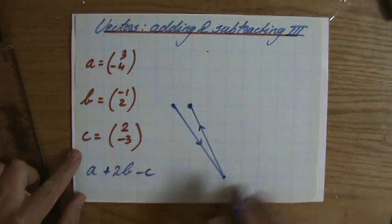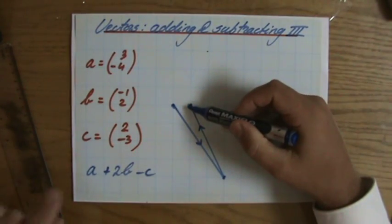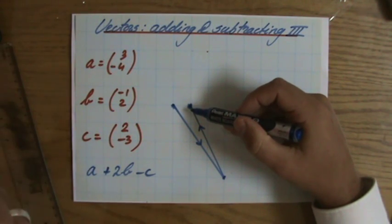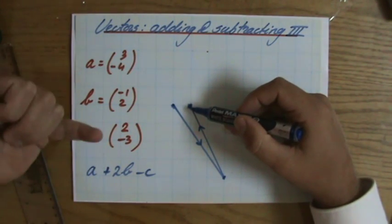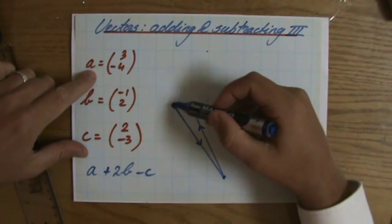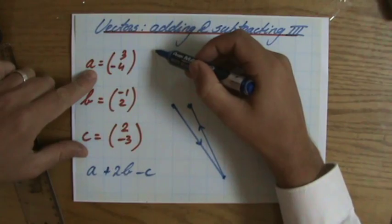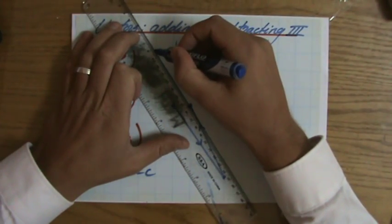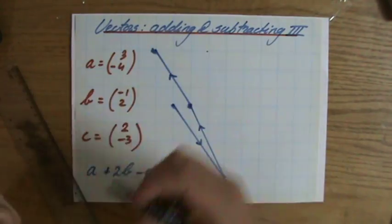So I'm standing here, and then minus C. Now that's interesting, because if C is 2, -3, then minus C, which is the opposite direction, is going to be -2, 3. The signs change. So -2, 1, 2, 3, over there. And I'm going to draw that. Voila.